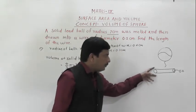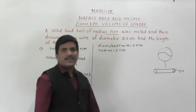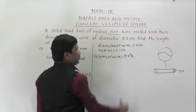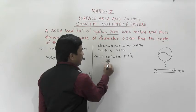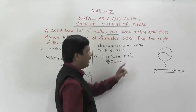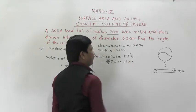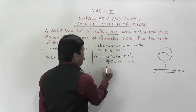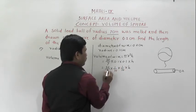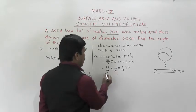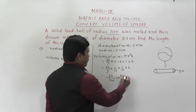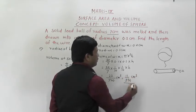Now what is the volume of the cylinder? Volume of cylinder uses formula π × r² × h. So volume of wire equals π × r² × h. Here π = 22/7, radius is 0.1, which we can write as 1/10, multiplied by height h. So we get 22/7 × (1/10) × (1/10) × h. That gives us 22/700 × h, which simplifies to 11h/350 centimeter cube.